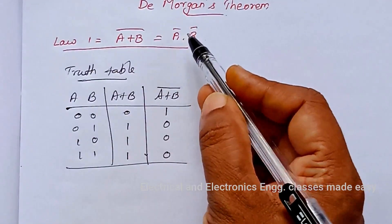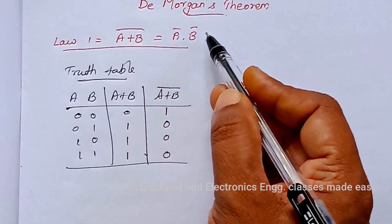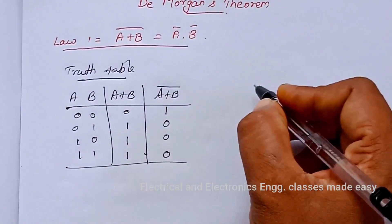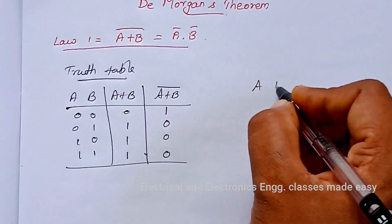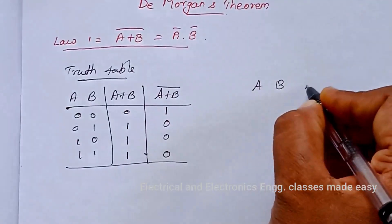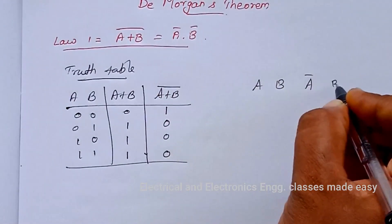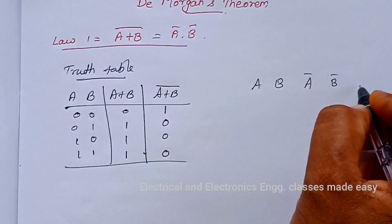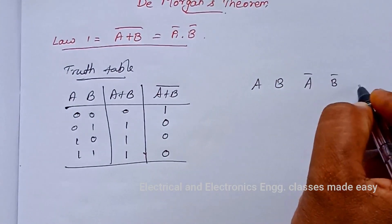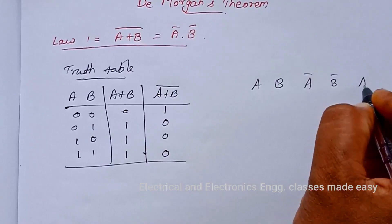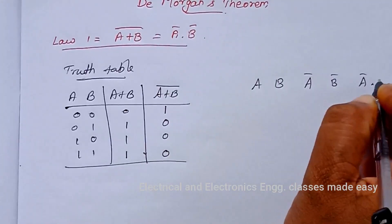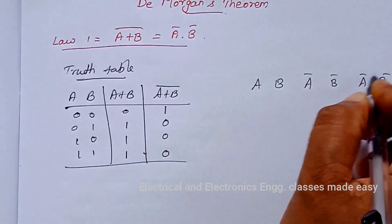Now let us check A bar dot B bar. We add columns for A bar and B bar, and then compute A bar dot B bar as another output.